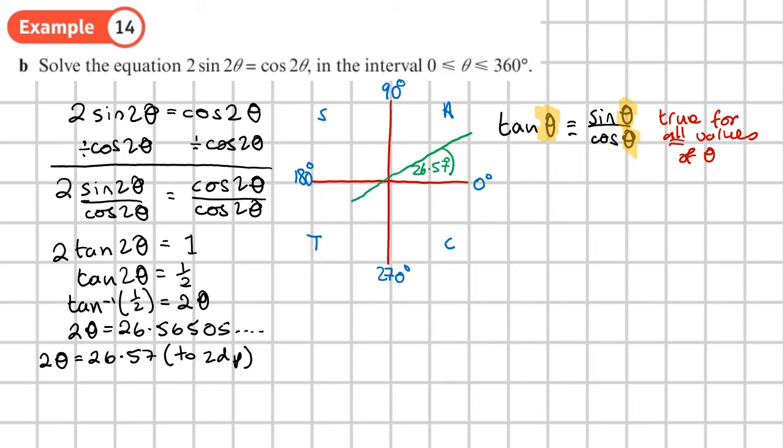And that is going to be in this part of the CAST diagram. And this is the 26.57, my rounded answer. Now we know that we make this into a cross like this. And my principle solution landed in this part of the CAST diagram, which tells me that all of the things are positive.